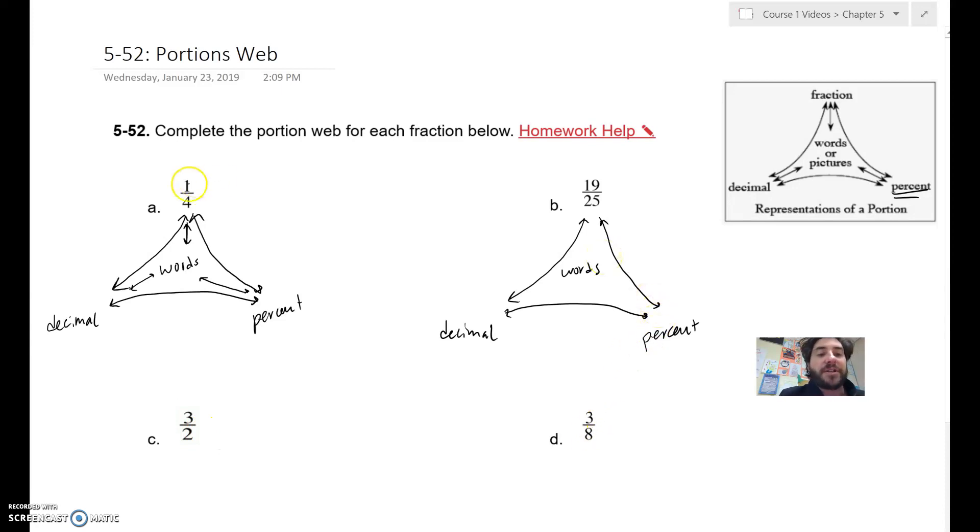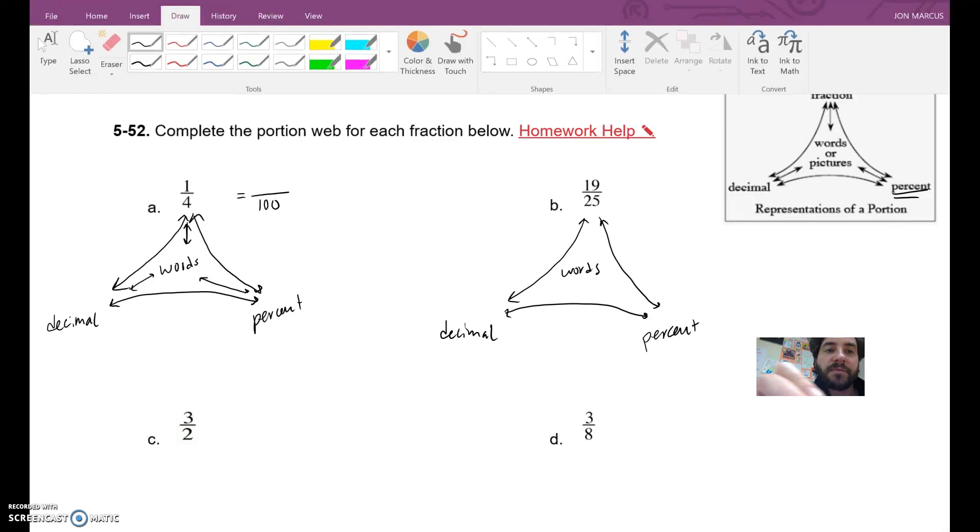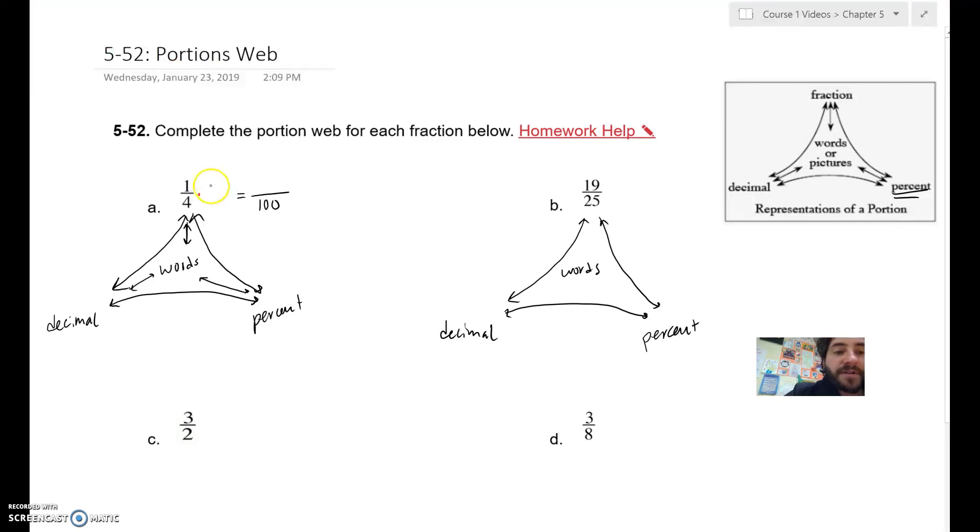When given a fraction, you can either turn it into a percent at first, or you can turn it into a decimal. If I can easily figure out, well, what is 1 fourth written out of 100, right? If I can use the giant 1 to make that happen, I'll turn it into a percent first.